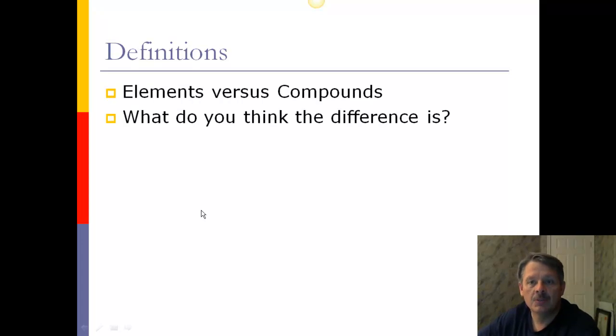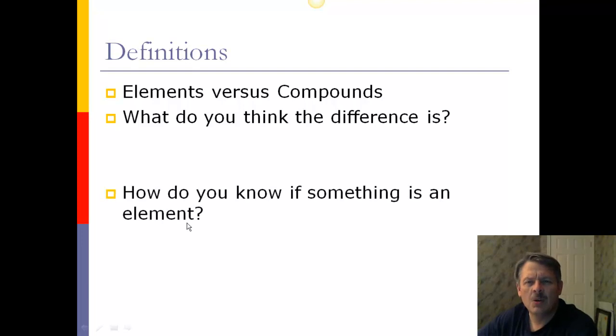First thing is the definition, elements versus compounds. What do you think the difference is? This is something you should be very sure of already. How do you know something's an element? The easiest way to know something is an element is you look on your periodic table. It's called the periodic table of the elements. So if it is on the periodic table, it's an element. If it's not, it's not. It's that simple.